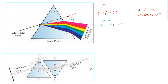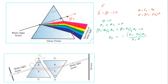For total dispersion equal to zero: first prism is crown prism, so (μv − μr)_crown × A_crown plus (μv − μr)_flint × A_flint equals zero. Rearranging: A_flint = −[(μv − μr)_crown / (μv − μr)_flint] × A_crown. This gives the ratio of the angle of the flint prism to the angle of the crown prism.